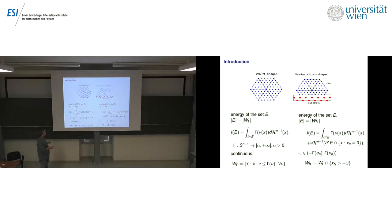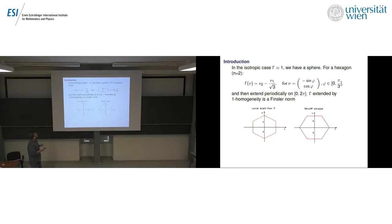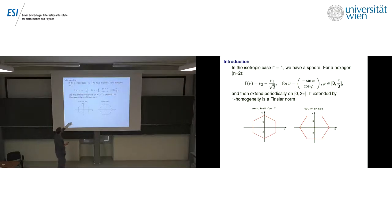We want to justify this kind of functional starting from the atomistic point of view. In the case where gamma equals 1, the Wulff shape is a sphere. If you want a hexagon, the corresponding gamma extended by one-homogeneity is simply a Finsler norm, whose unit ball is a hexagon.